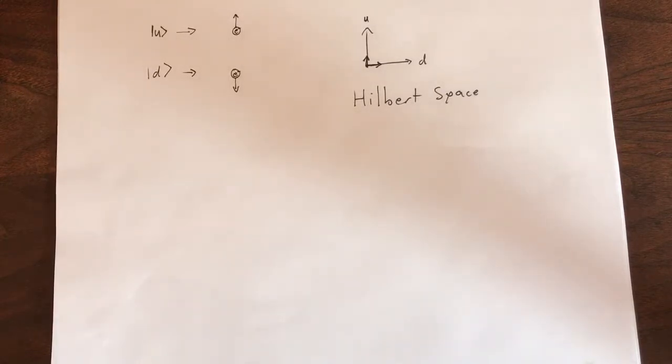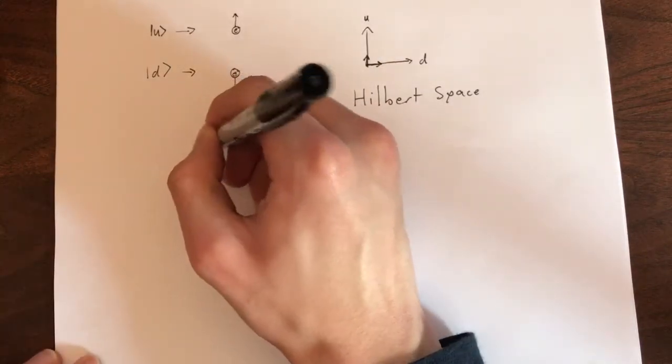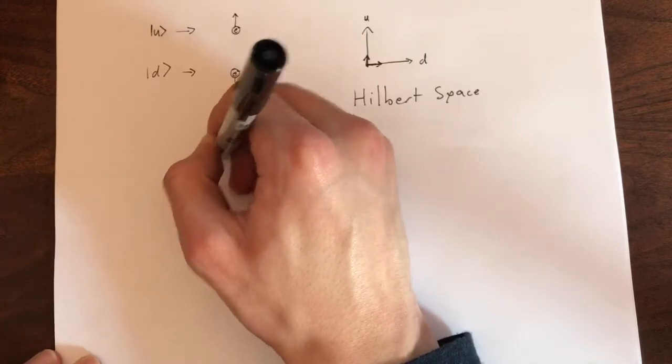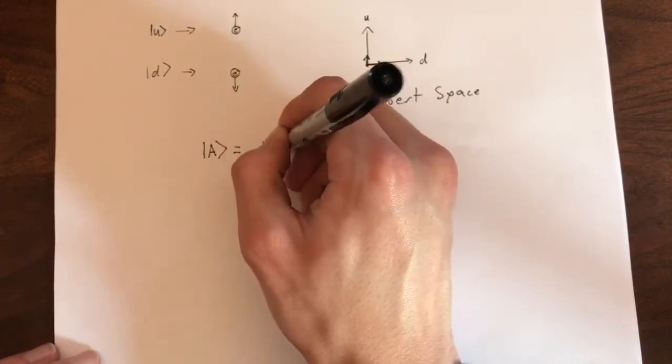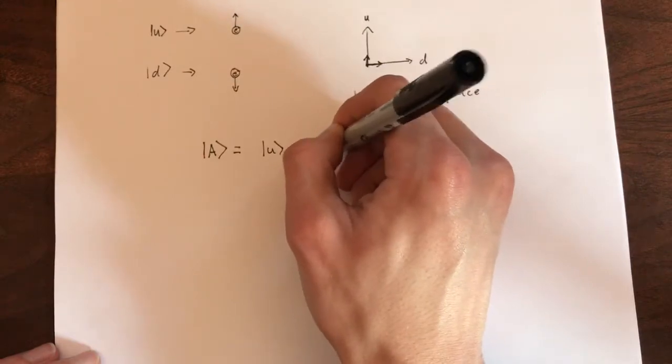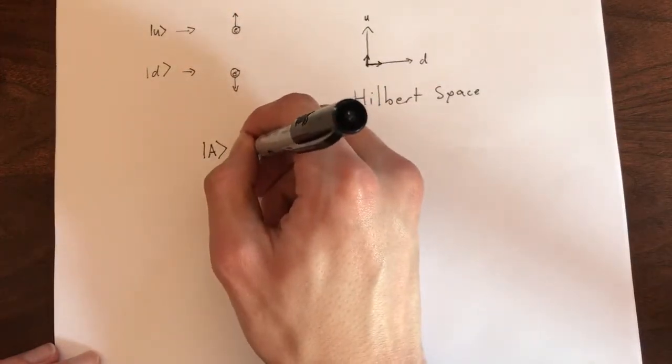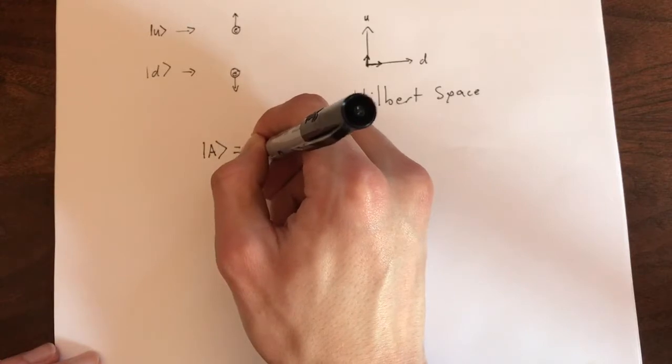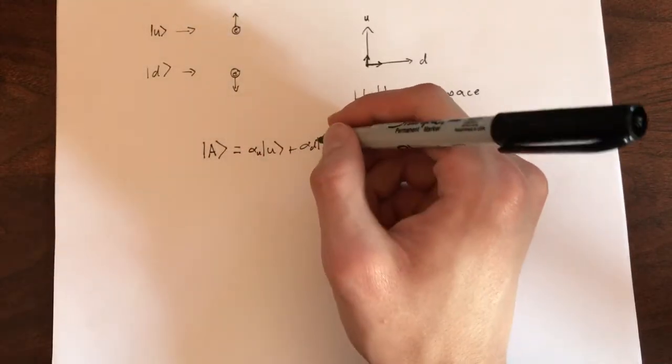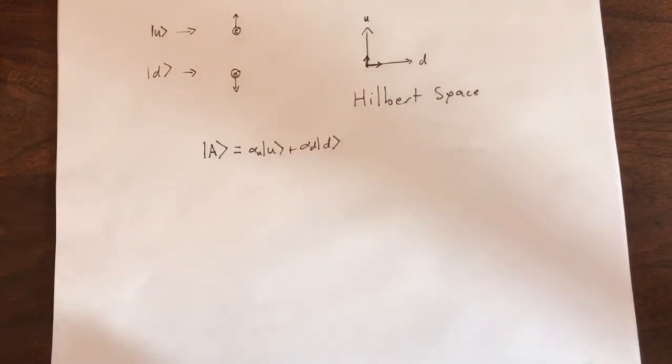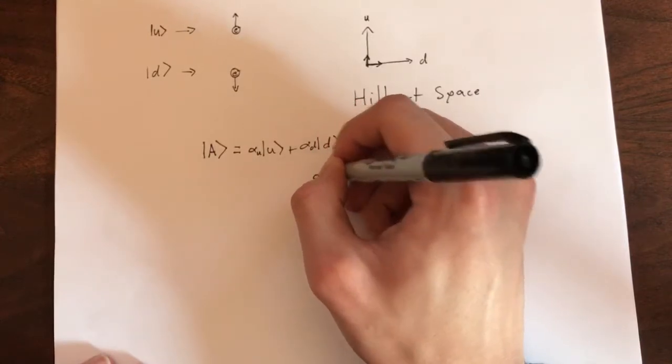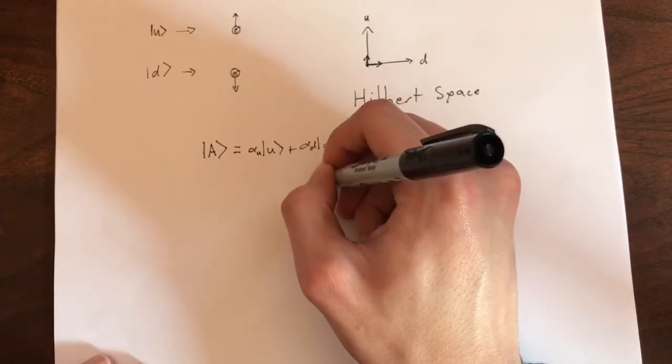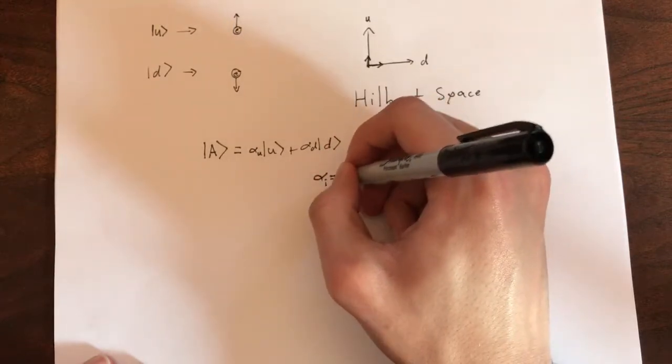With these two states, we can represent any spin state as a linear combination of the up and down states, like this. Assume we have some ket vector, some spin state A. We can show that as a combination of up and down, but we need components first. So, we'll show those as alpha up and alpha down. From episode two, we know that these alpha components can be represented like so.